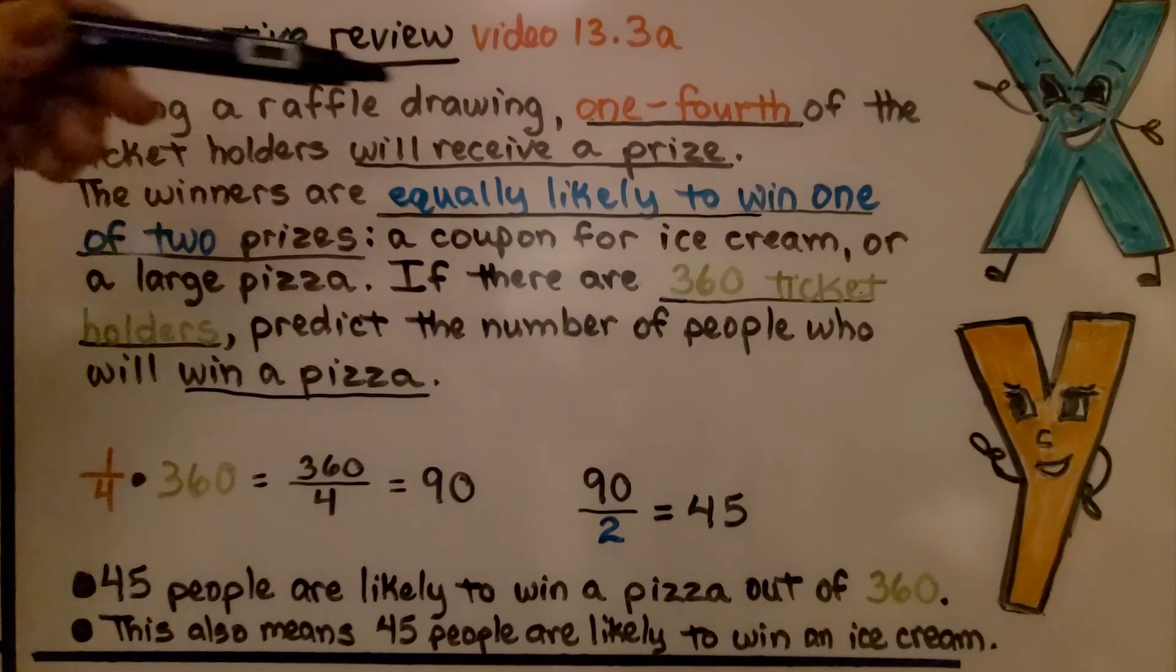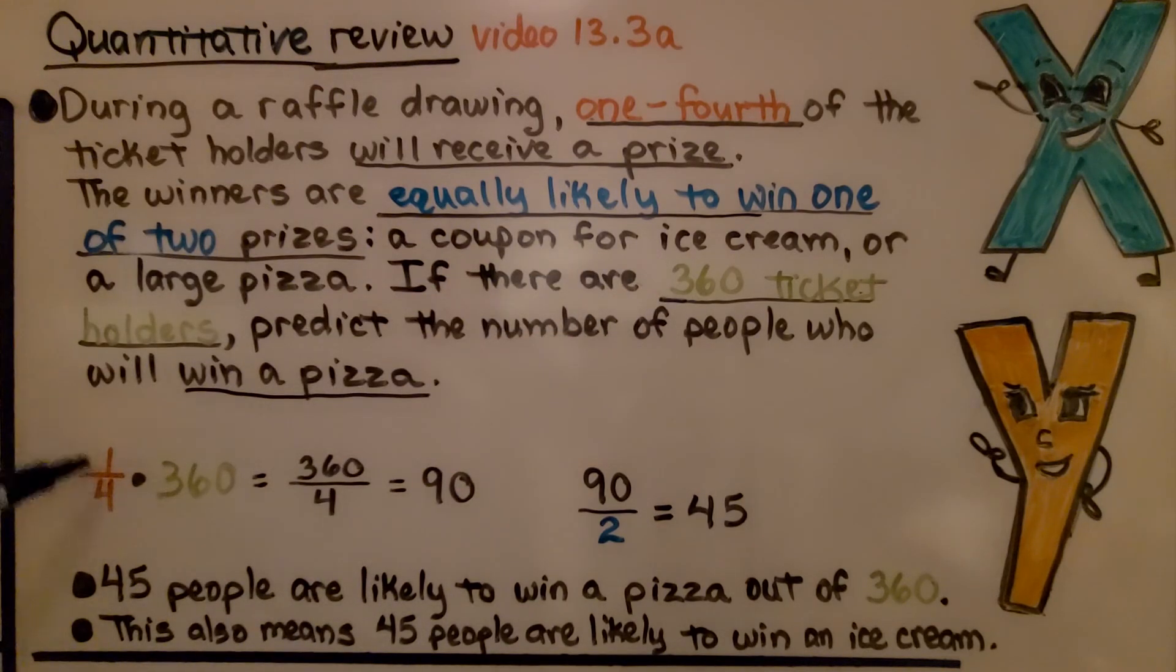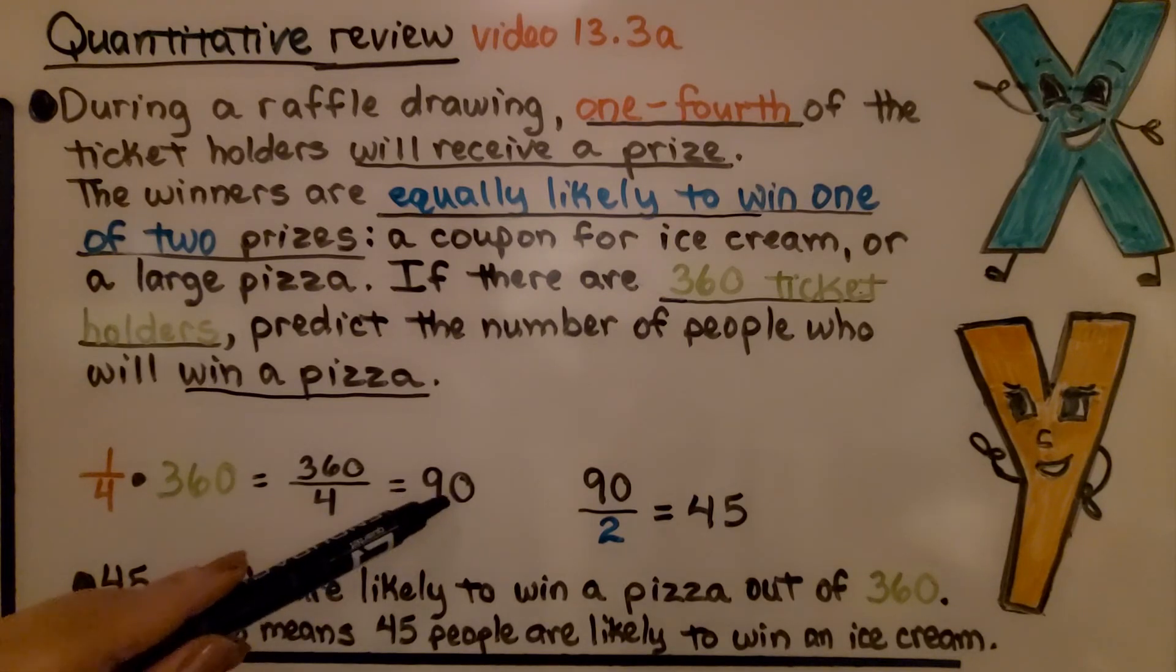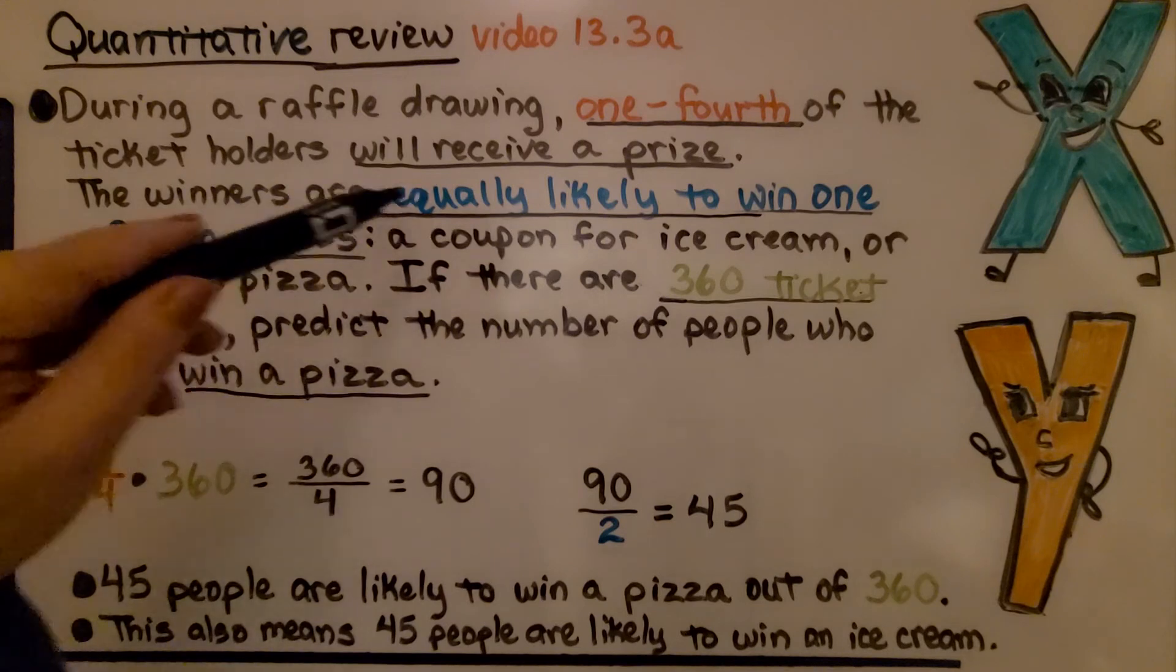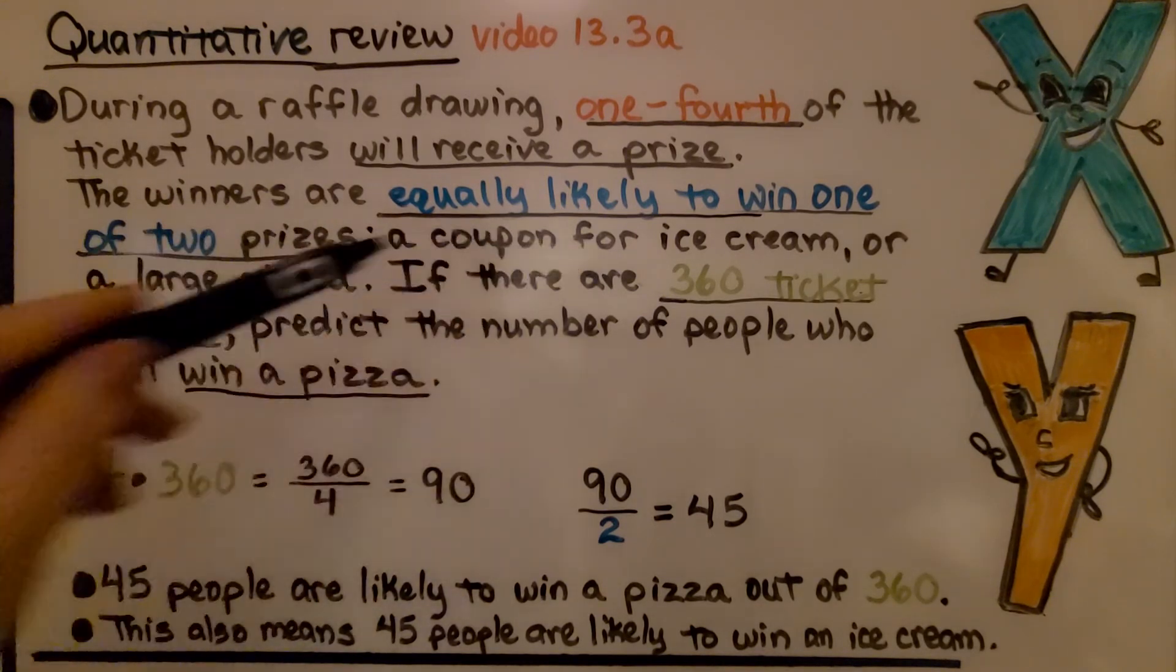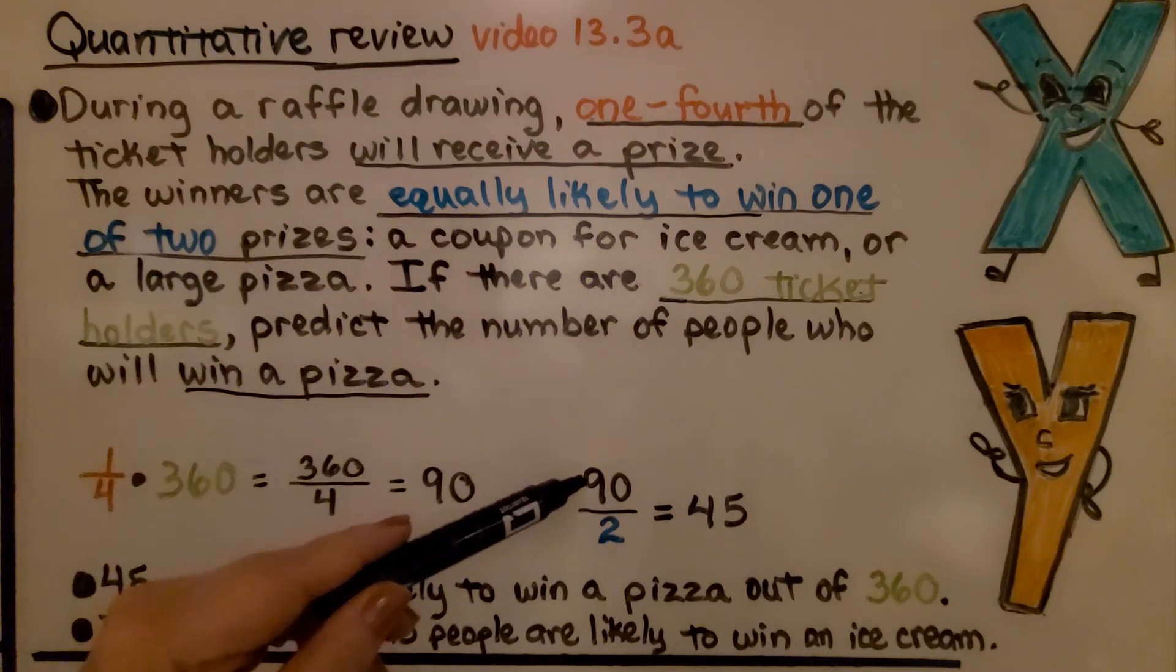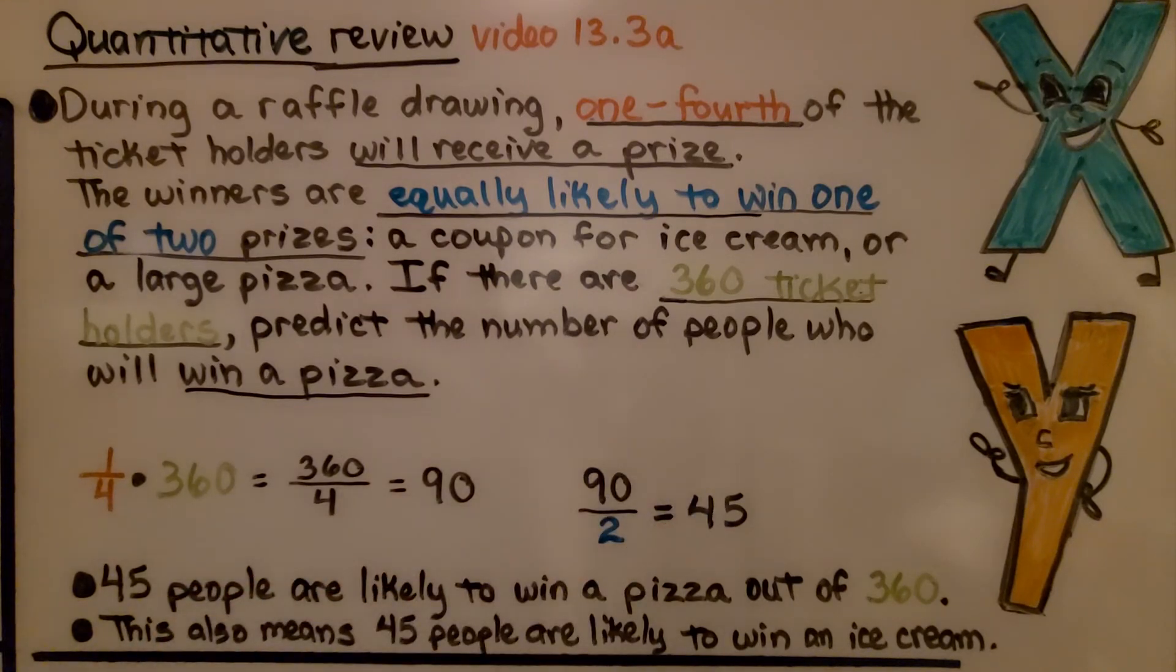First thing we do is we find one-fourth of 360. That's 90. And since they're equally likely to win one of two prizes, they're equally likely to win either one of these two prizes, the ice cream or the pizza, the 90 is going to be divided by two. There's two prizes. That's 45. That means 45 people are likely to win a pizza out of the 360.